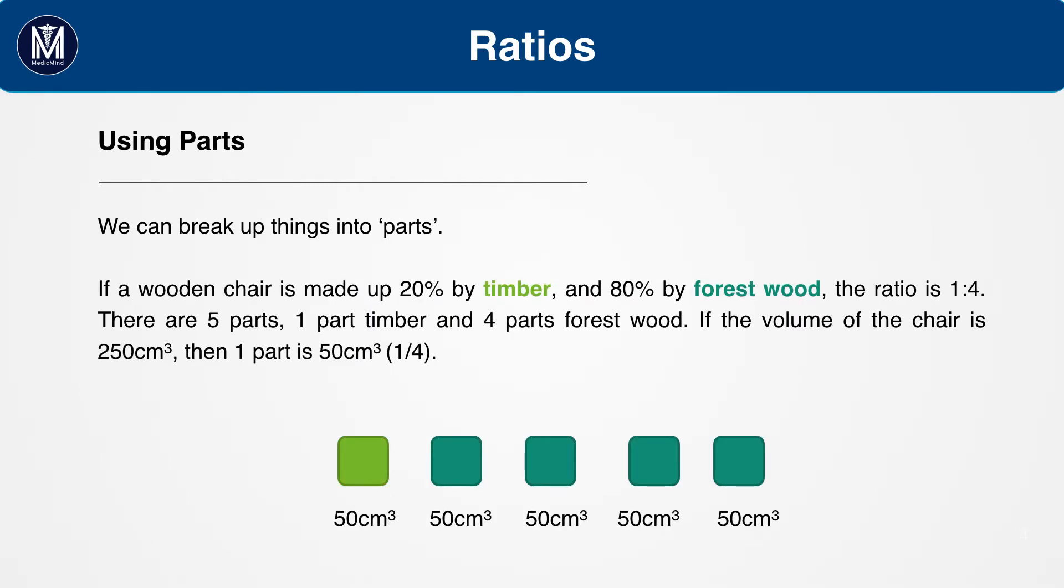Here's another example. If a wooden chair is made up 20% by timber and 80% by forest wood, the ratio is 1 to 4. There are five parts, one part timber and four parts forest wood.